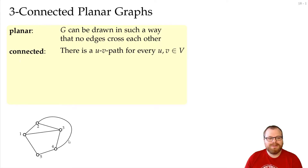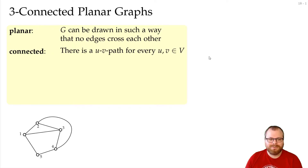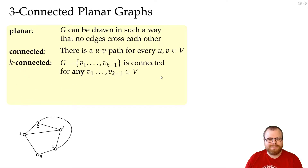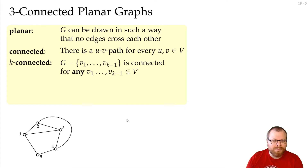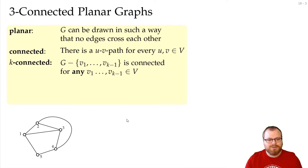We defined a planar graph to be a graph that can be drawn in the plane such that no edges cross each other, and we said a graph is connected if there is a UV path for every pair of vertices. This connectivity we can extend to K-connectivity. A graph is K-connected if the graph remains connected after I remove any K-1 vertices — so for every choice of K-1 vertices, no matter what it is, if I remove them, the graph stays connected.